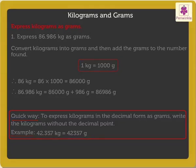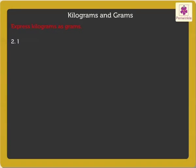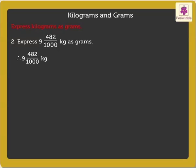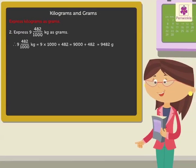Now, let's solve one more example. Express 9 and 482 upon 1000 kilograms as grams. Here, 9 and 482 upon 1000 kilograms is equal to 9 into 1000 plus 482, which is equal to 9000 plus 482, which is equal to 9482 grams. Kids, now try solving a few examples on your own to understand it in a better way.